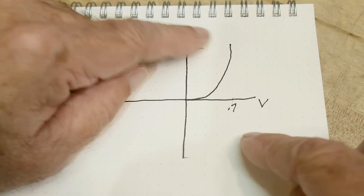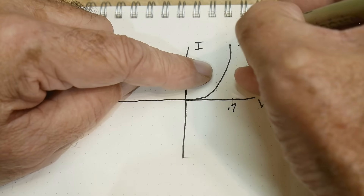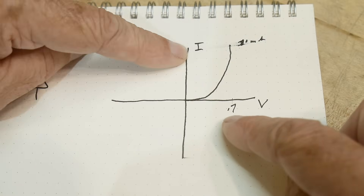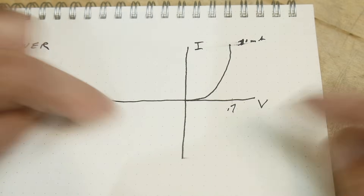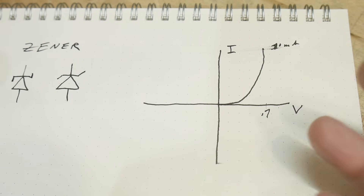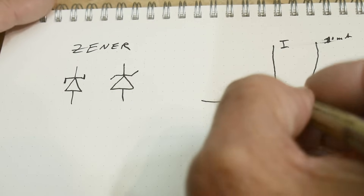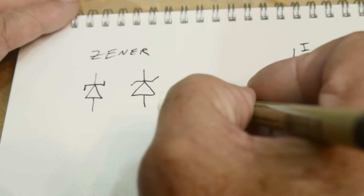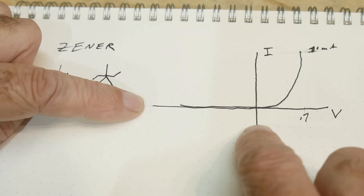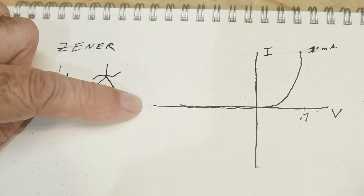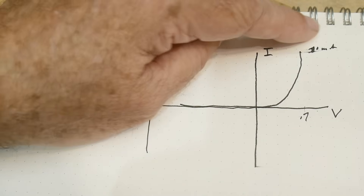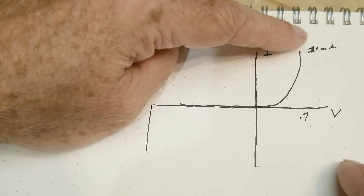Many diode testers test at 10 milliamps, so we have 10 milliamps and 0.7 volts on this curve. If you put negative voltages on a diode — diodes are kind of one-way valves — an ideal diode won't conduct any current in reverse. But if you put too much on it, they break down. This is called the breakdown voltage.